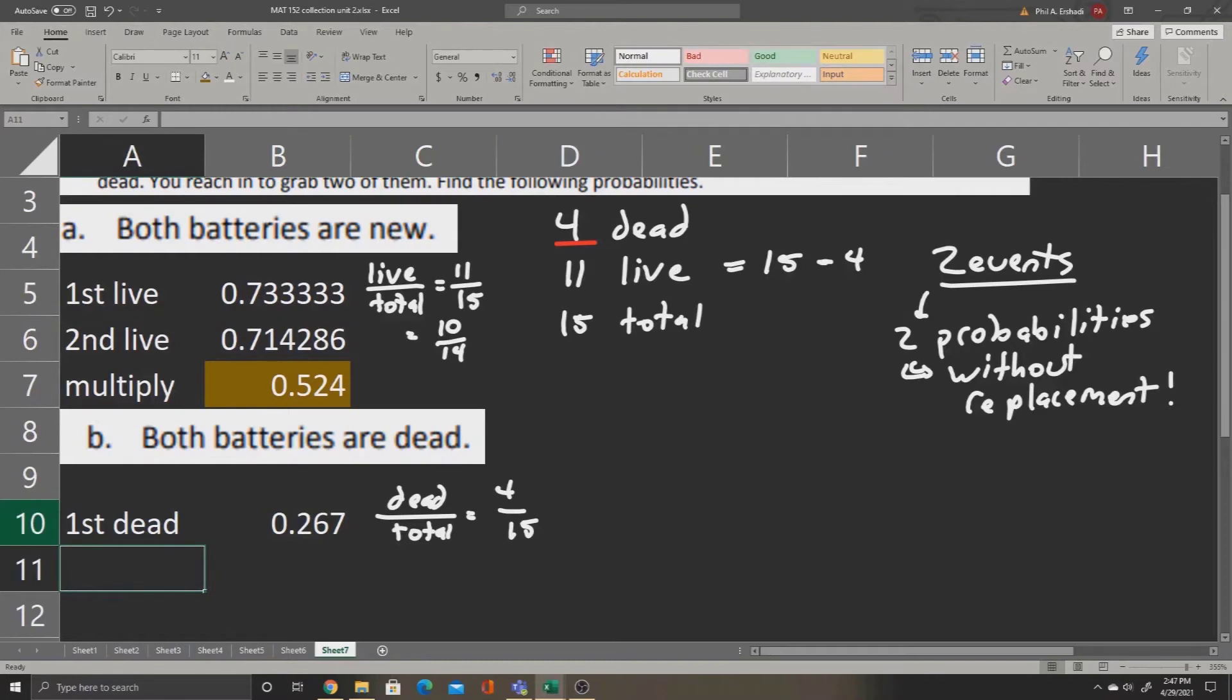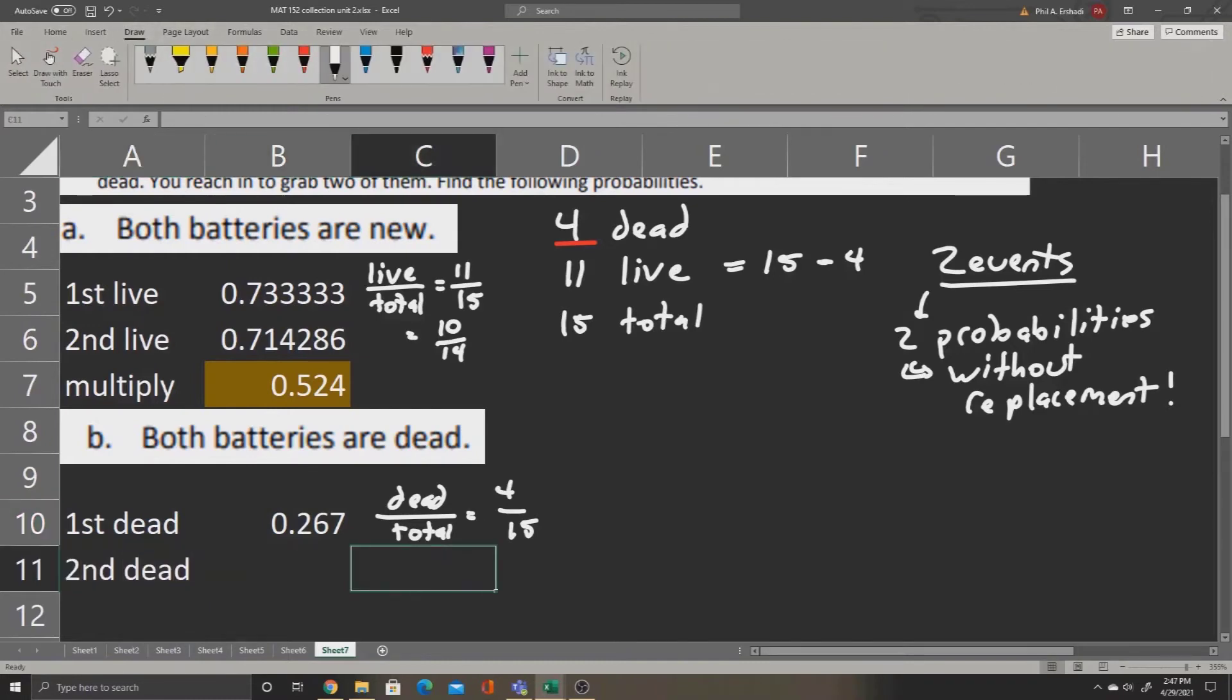Now let's find the probability of getting the second dead battery in a row. Now that we've taken one of the dead batteries and put it into our remote, we don't have four dead batteries anymore. Now we only have three. And also, we no longer have 15 total batteries because we've taken one out and put it in our remote. We now have 14. So now to calculate the probability, we'll say equals 3 divided by 14. This is the probability that the second battery is also dead.